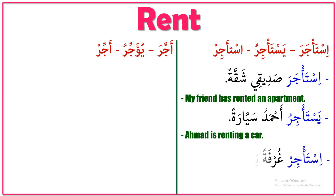Command form: 'istajir khurfatan ya Khalid' — this is the command form, meaning 'rent a room, Khalid.' So that covers istajara — used when you are the one renting. Now we'll look at ajara, which means when you rent your place to someone.